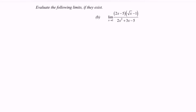Hello everyone. In this video I'm going to discuss the topic limits and continuity. Here is the example for indeterminate form: evaluate the following limit if it exists — limit as x approaches 1 for the function (2x - 5)(√x - 1) over (2x² + 3x - 5).